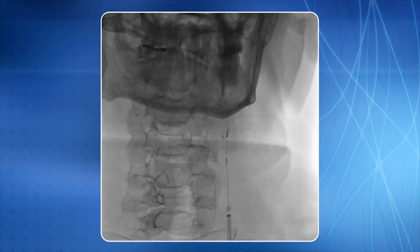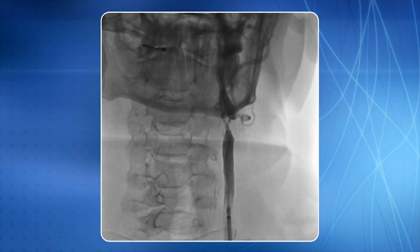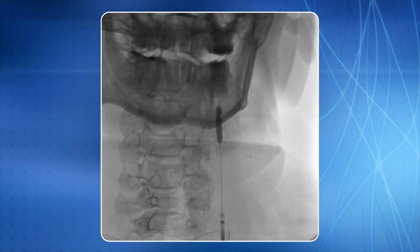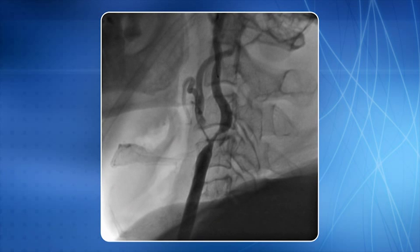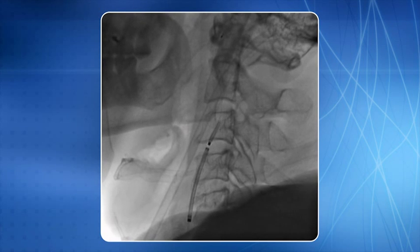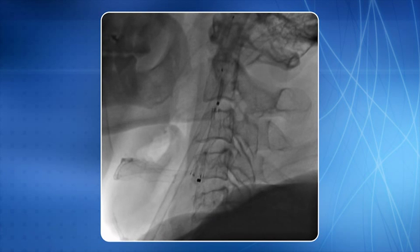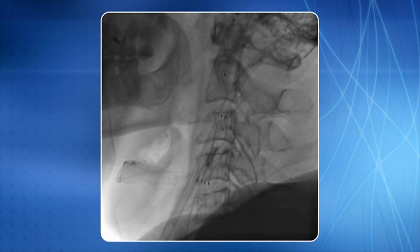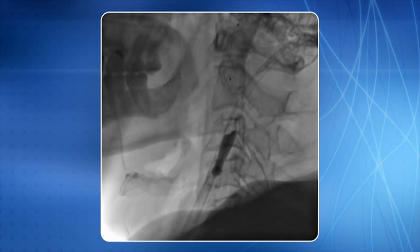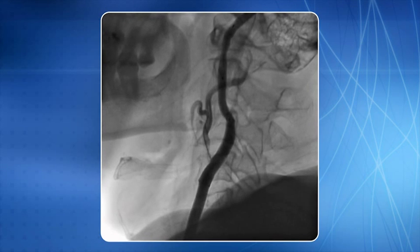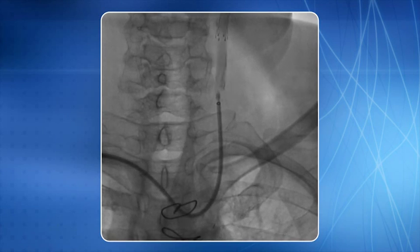This is another view. A PTA catheter is negotiated across the lesion and ballooning of the lesion is performed. This is the balloon result. We have now negotiated a self-expanding stent, which is deployed, and post-stent balloon dilatation is in progress. This is an excellent end result, and this is another view showing the result.